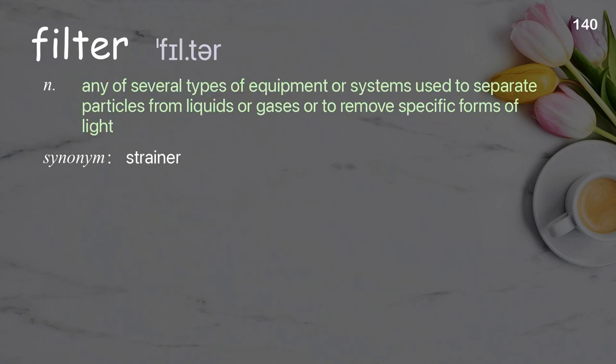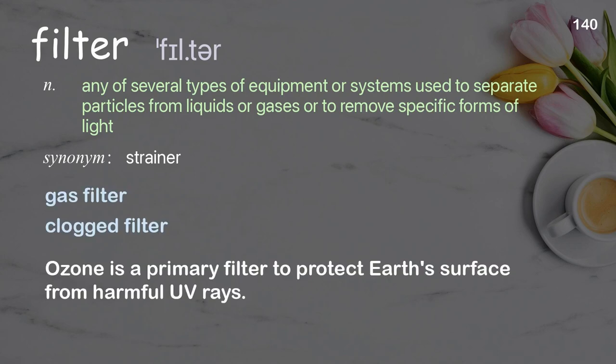Filter: any of several types of equipment or systems used to separate particles from liquids or gases, or to remove specific forms of light. Examples: gas filter, clogged filter. Ozone is a primary filter to protect Earth's surface from harmful UV rays.